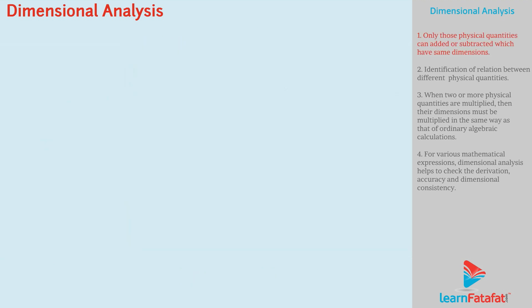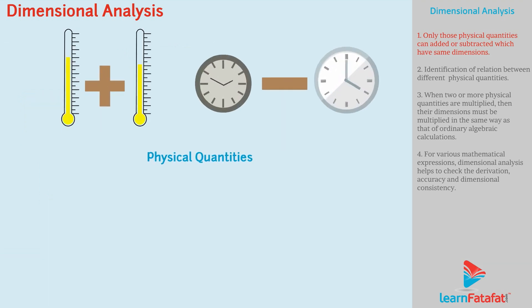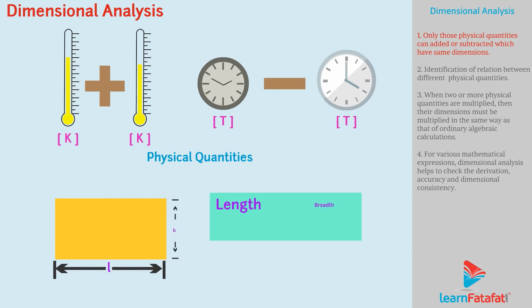First, dimensional analysis tells us that only those physical quantities can be added or subtracted which have same dimensions. For example, length of rectangle and breadth of rectangle can be added or subtracted because length and breadth have same dimensions, i.e. L. However, velocity cannot be added to temperature because they have different dimensions.